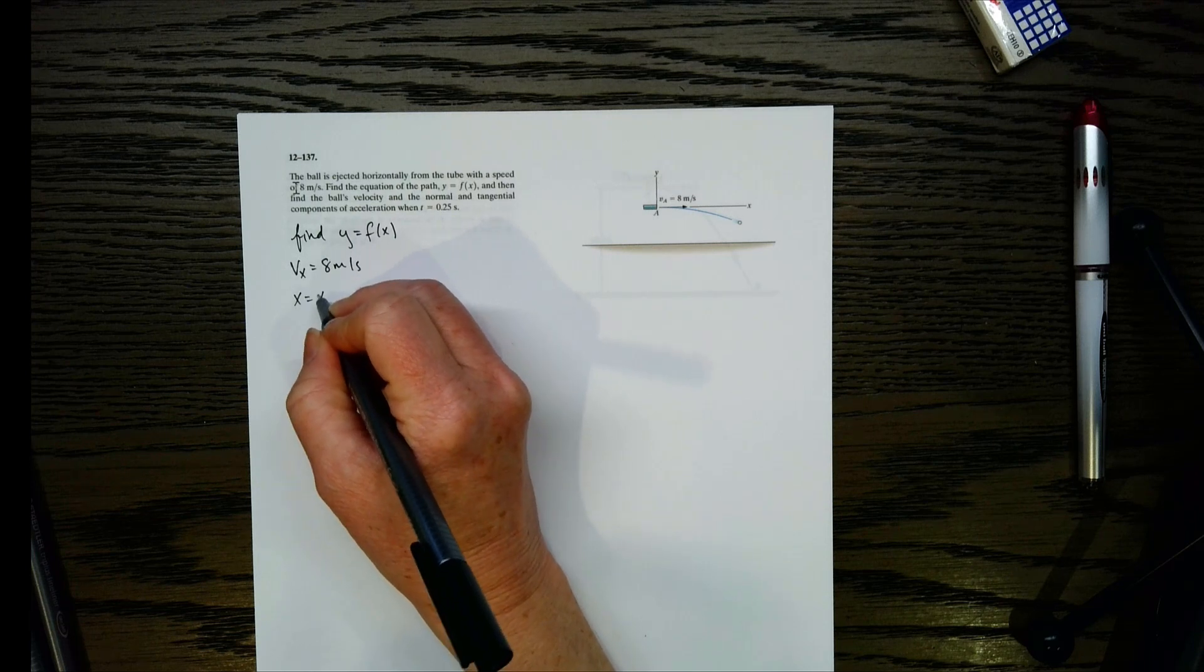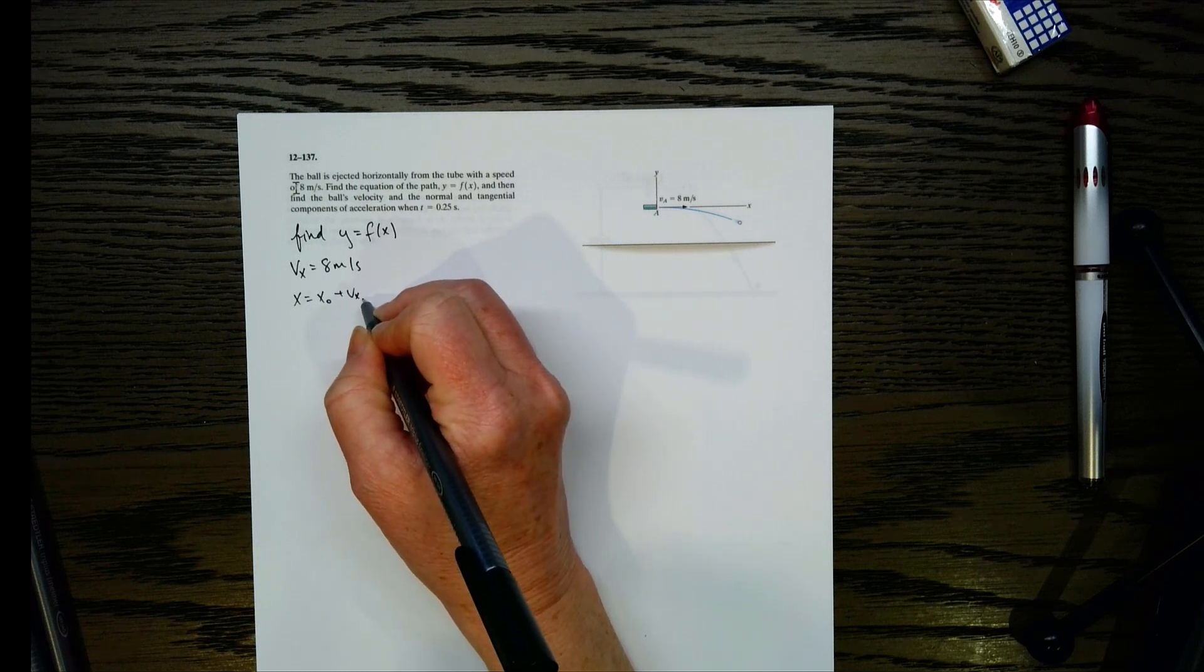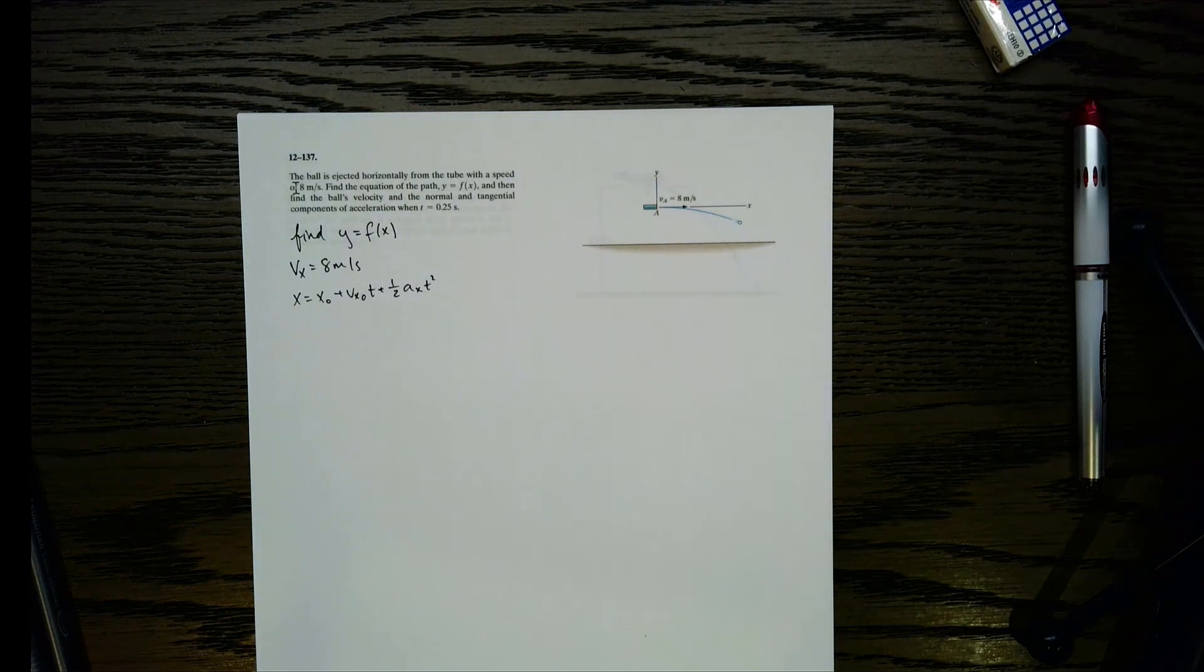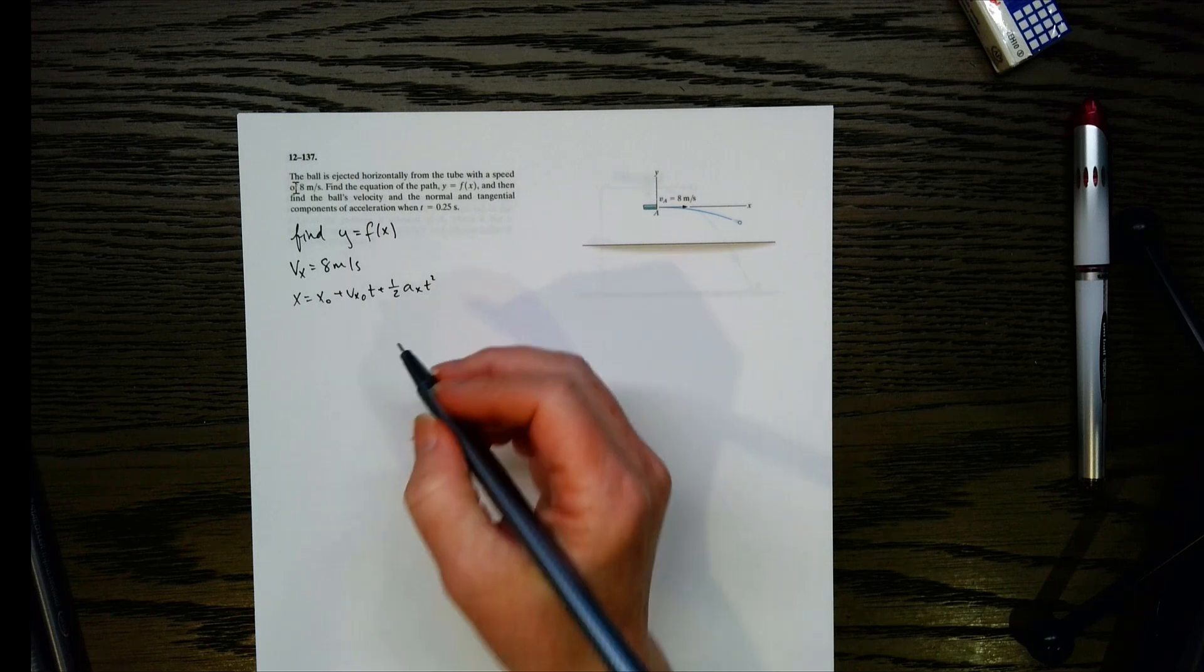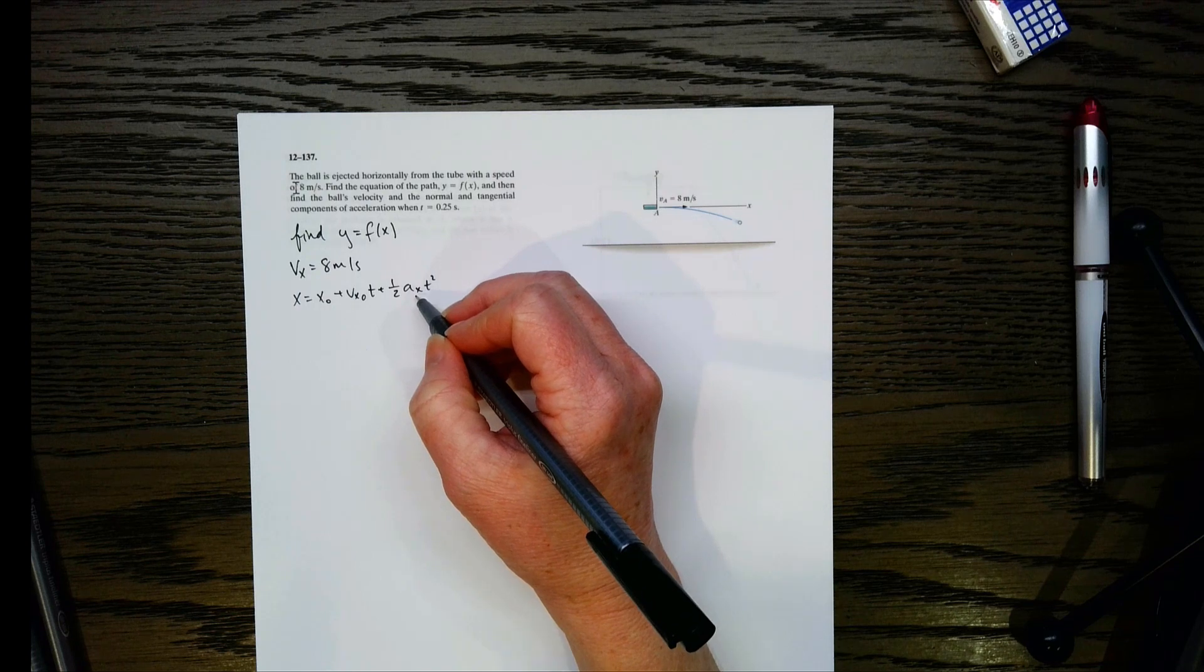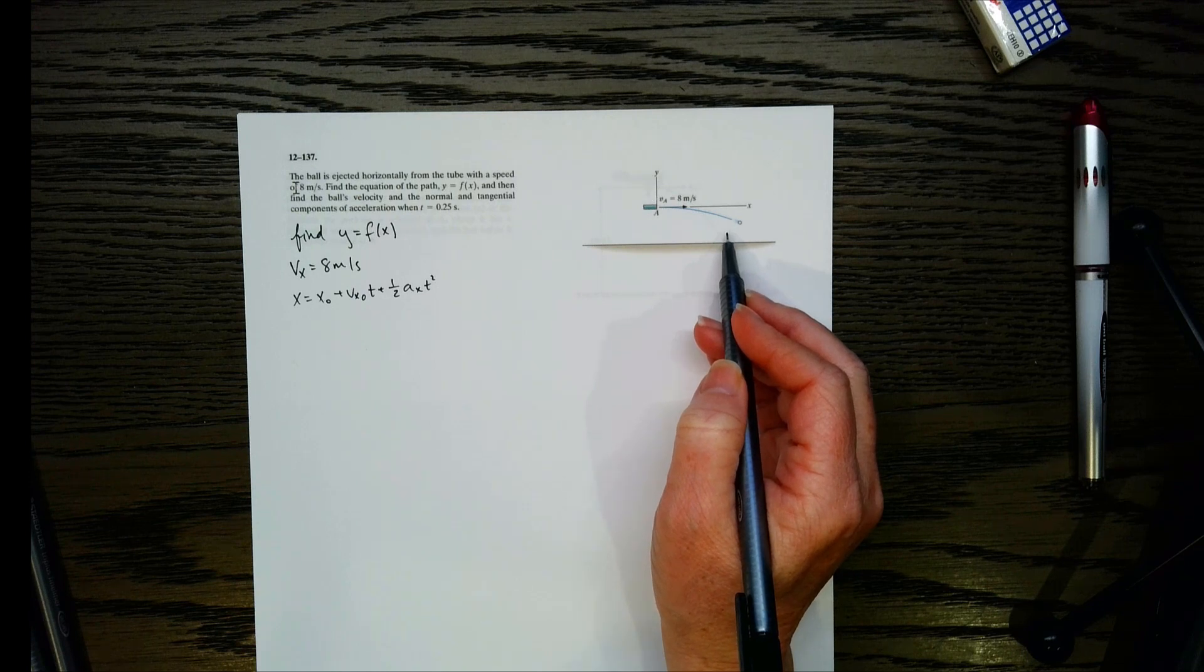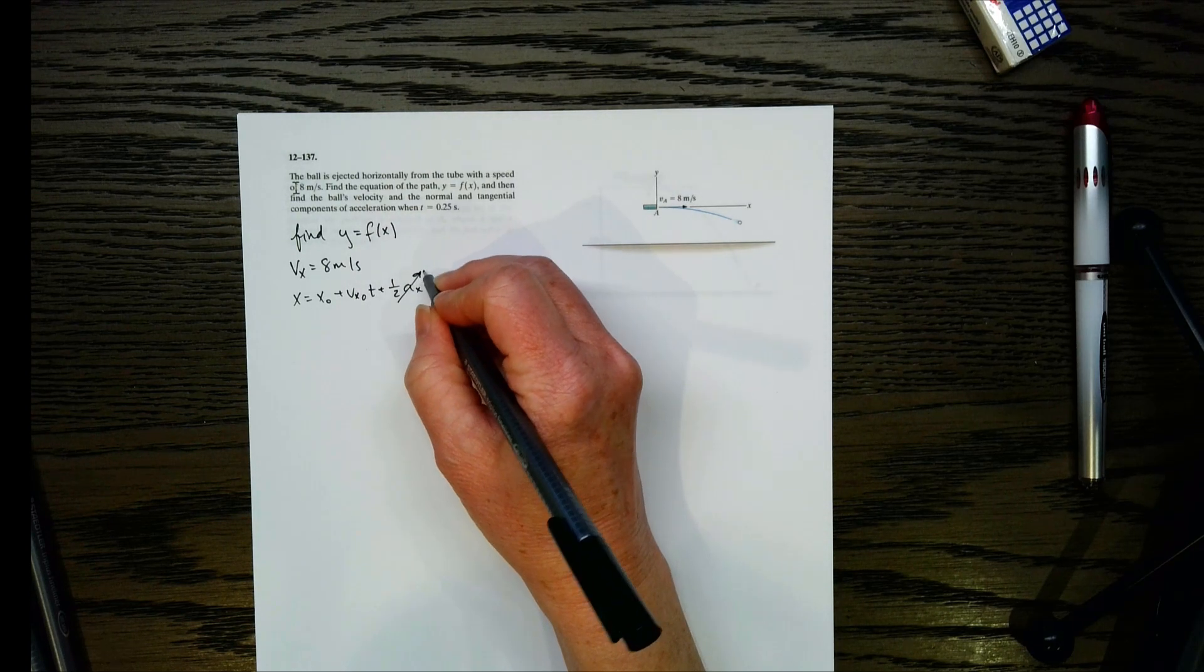So vA is 8 meters per second. Now, notice what direction that is in. It's all in the x direction. So there is no y component there. So that means vx is 8 meters per second. Looking at that, I want to get an equation for y as a function of x. Let's see what we could do here. How about if we try this kinematic equation? So x equals x naught plus vx naught times t plus 1 half ax t squared.